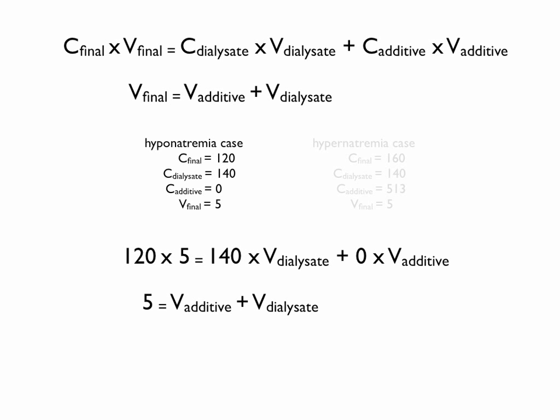The second equation is we'll get a total volume of 5 liters, which will be made up of the additive and the dialysate. We will rearrange that to solve for the volume of dialysate, and then we will take that volume of dialysate and substitute it back into the first equation. I've already started to block off the sodium content of the additive. The concentration is zero, it doesn't matter what the volume is. It's going to contribute no sodium to this equation, so that can just be crossed off.